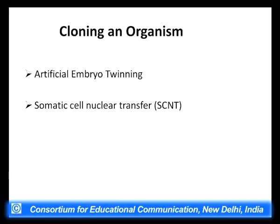When we talk about cloning, the first picture that comes to mind is cloning an organism — human cloning. Organismal cloning can be achieved by two methods: one is called artificial embryo twinning and the other is called somatic cell nuclear transfer.